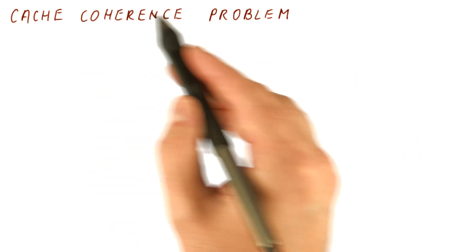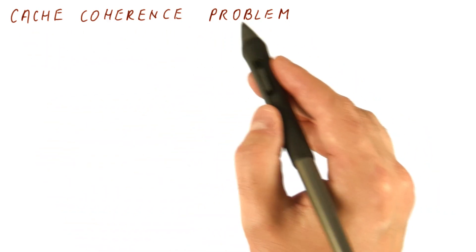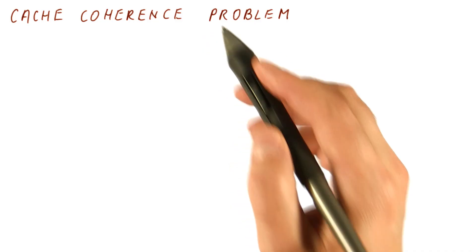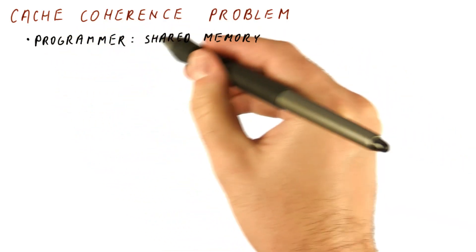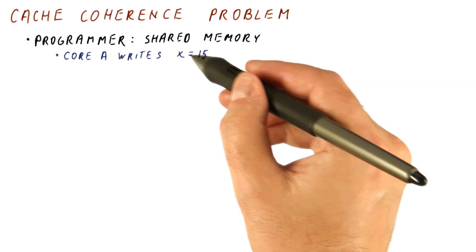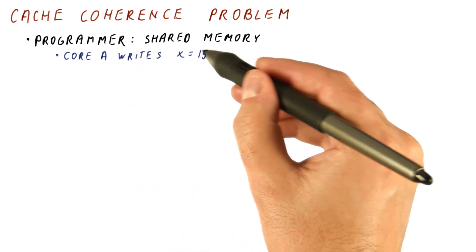Let us first see what the problem is with cache coherence. That is, do we even need cache coherence? Our programmer is expecting to see shared memory behavior. That means that when one core writes, let's say, 15 to a variable,